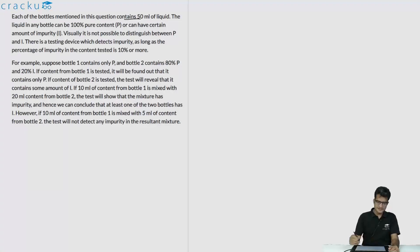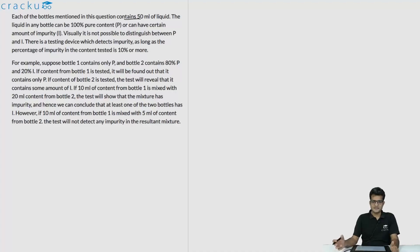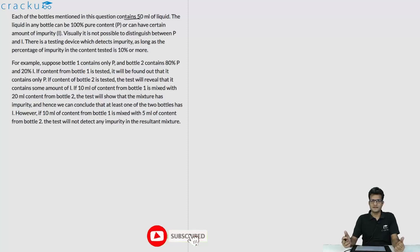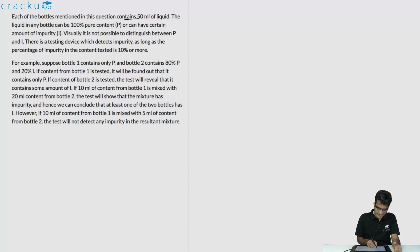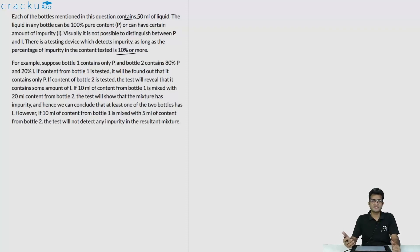In this question, we are told that there are some bottles and each of them contains 50 ml of liquid. They can be either 100% pure or they can contain some impurity. Once testing is done by taking samples from some bottles, if the percentage of impurity is greater than 10%, it will detect impurity. If it is less than 10% — say 8% — the test will not detect any impurity.